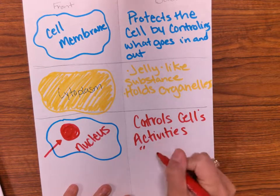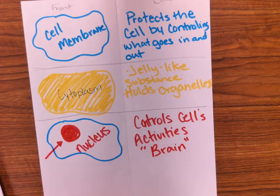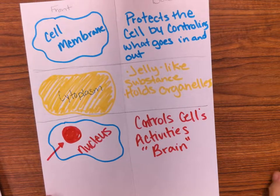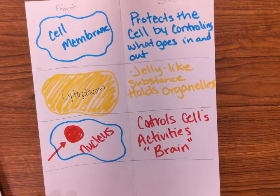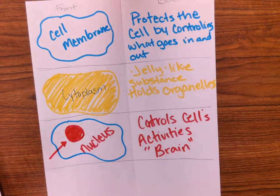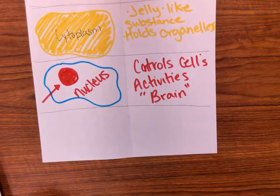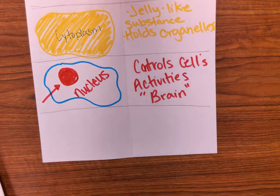The nucleus is also called the brain of the cell. We talked about that in sixth grade when we discussed eukaryotes and prokaryotes, and we'll talk about it again when we discuss heredity in the next six weeks.